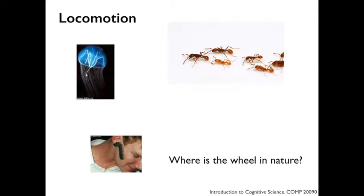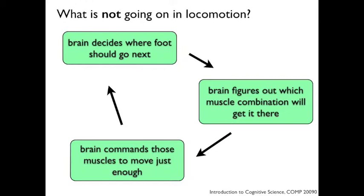We were at great pains to point out that there is a myth in our culture that the brain is responsible for everything. We can dispel this myth. The brain is not figuring out where to move, figuring out what part of the body to move, and commanding those parts of the body. This is an inappropriate view of the relationship between the brain and the body.